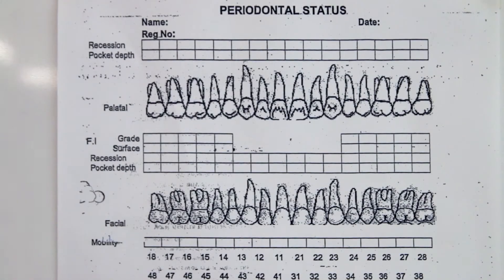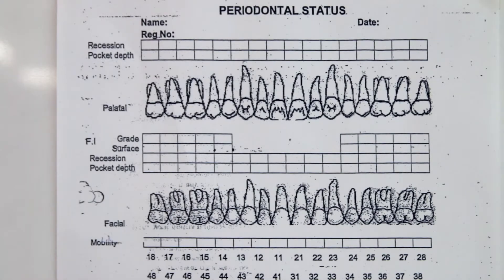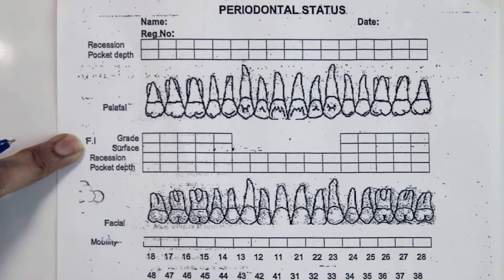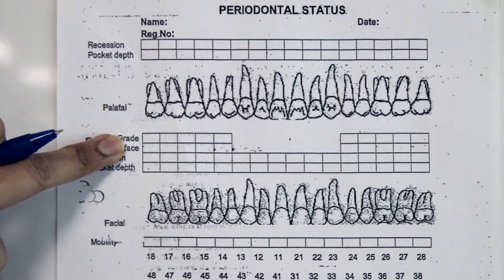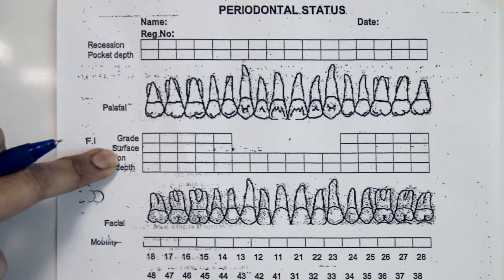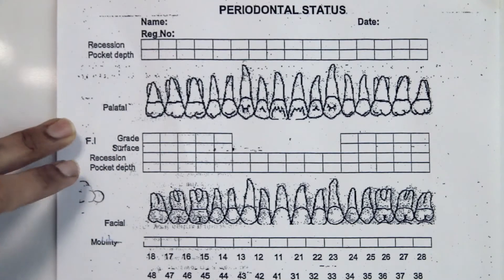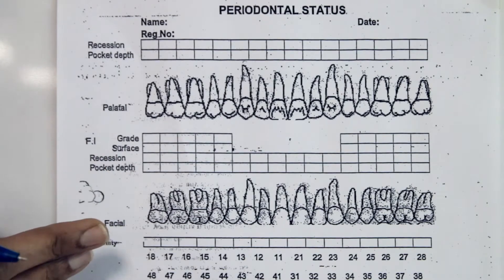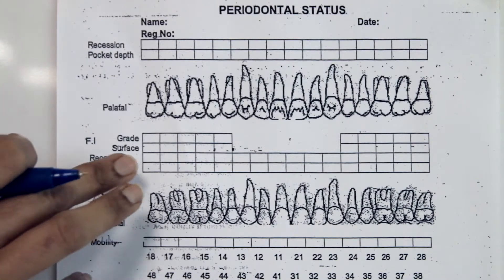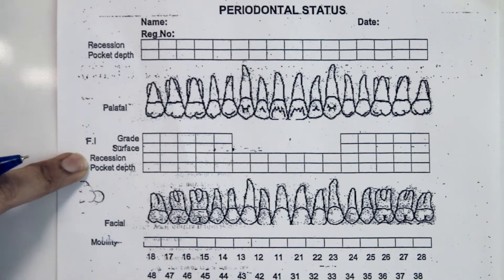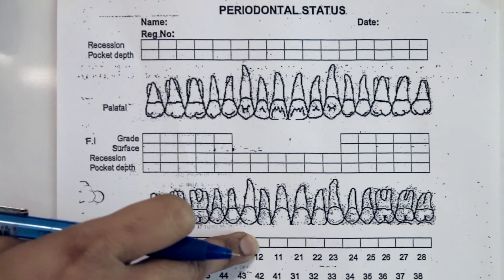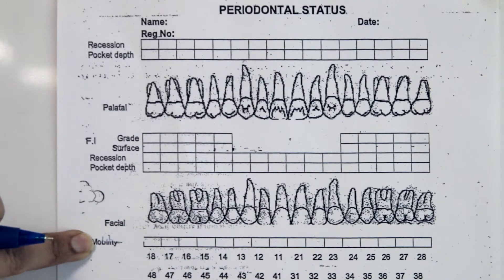In this periodontal charting form, the various parameters that can be recorded are periodontal pocket depth, gingival recession, and furcation involvement — specifically the grade of the furcation, whether it is grade 1, 2, 3, or 4, and on which surface the furcation is present. On the maxilla, the furcation could be on the buccal, distal, or mesial surfaces; on the mandible, it could be the buccal or lingual surface. Mobility of the teeth can also be recorded here as grade 1, 2, or 3.